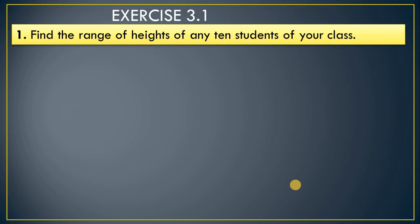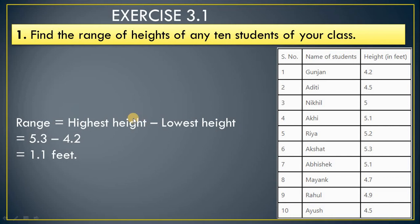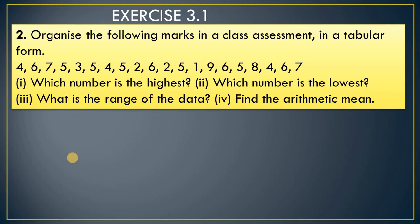Exercise Question 1: Find the range of height of any 10 students of your class. This answer varies from student to student. In my table, the highest height is 5.3 ft and the lowest is 4.2 ft, so the range is 1.1 ft. The unit depends on what is used — feet or centimeters.